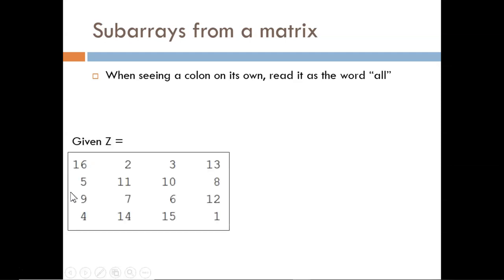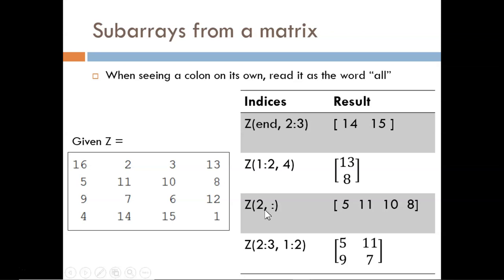Here's our starting matrix Z, which happens to be a 4x4 magic square. In this first example, we are extracting only the last row, so I will cross out all the other rows. Also, we only want columns 2 through 3, so let's cross out the others. What we are left with is just the 14 and 15 together in a small row vector.